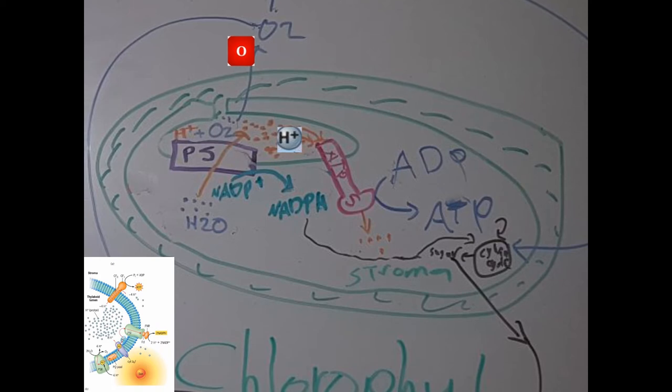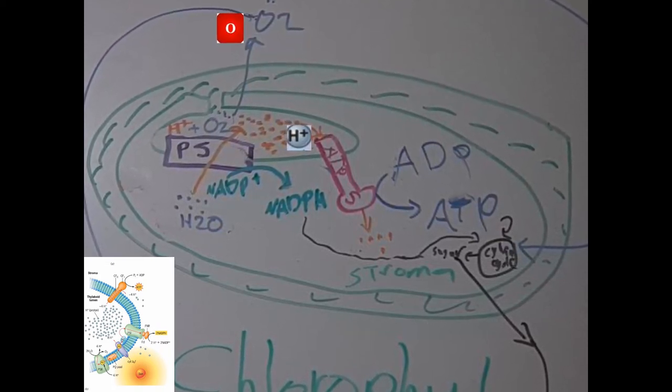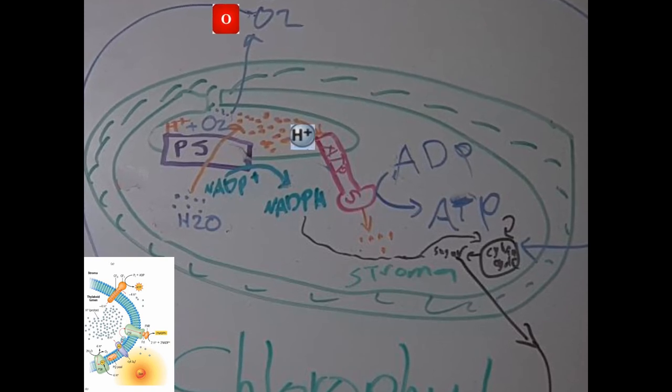These protons again move through the concentration gradient from the lumen of the thylakoid into the stroma through the ATP synthase enzyme.